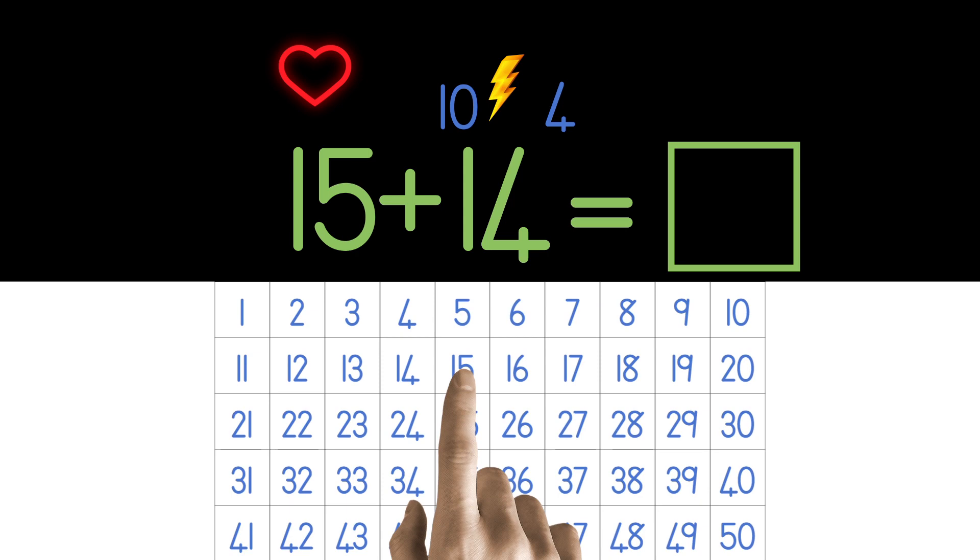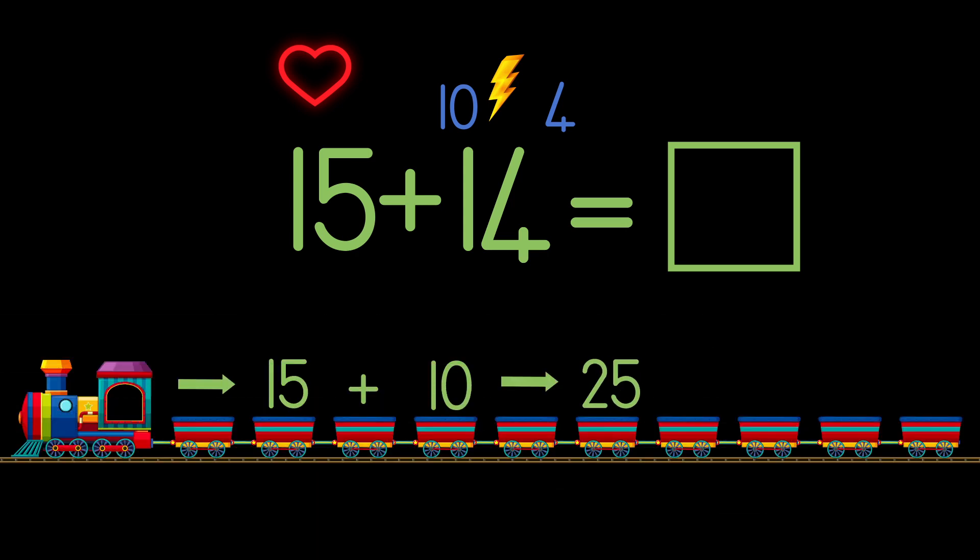Remember when we count in tens on the chart we jump straight down the blocks to go up in tens. So we find 15 and we go down 1 because we are adding 1 ten to our 15. So 15 plus 10 is 25. So we write down 25 after the arrow.